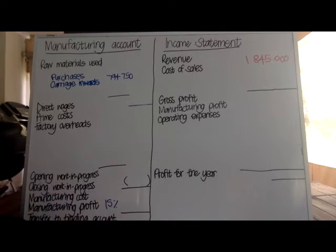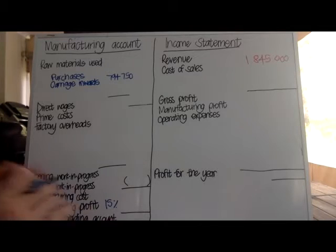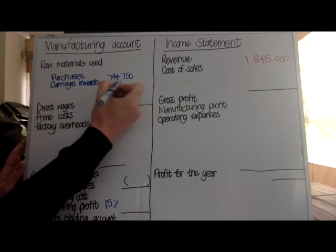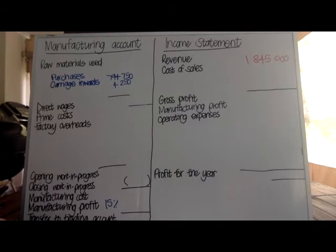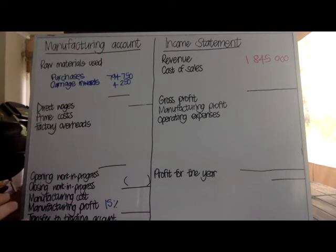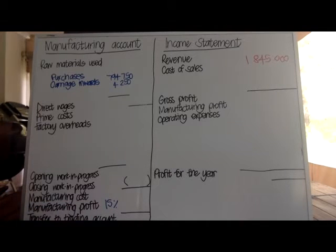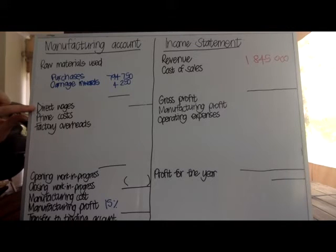Even though you can't physically see the transport, it does add to the costs that I have incurred and I have to factor it in when working out selling price. If it was carriage outwards, it would be referring to carriage of finished goods distributed to customers — making it a selling and distribution expense, part of operating expenses. But we only have carriage inwards here. Factory production wages are costs of making the product, so they go into my manufacturing account, and because they're specifically related to production, they're part of my prime costs — direct wages, also called direct labor.